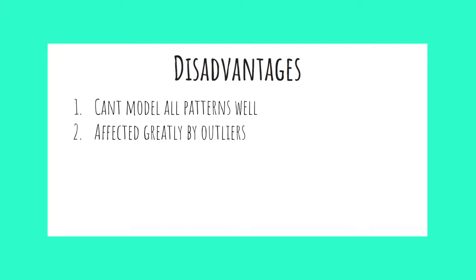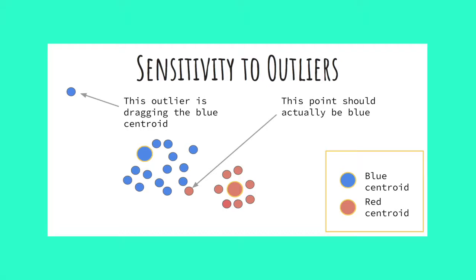A second disadvantage is that k-means is greatly affected by outliers. In this illustration, the two large circles are centroids and the smaller circles are data points. You can see in this contrived example there is a blue outlier in the top left corner. It is dragging the blue centroid up and to the left, farther than we might like. For that reason, there is a data point that is incorrectly assigned to the red cluster.